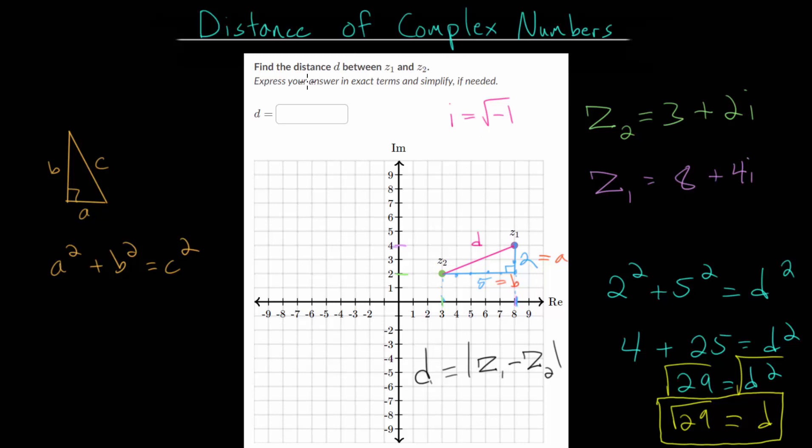So for now, finding this distance, we can set up this coordinate plane, draw a picture, and eventually just set up a right triangle, and then use the Pythagorean theorem to solve for the distance. For this problem, we found that D is the square root of 29.